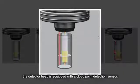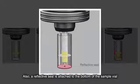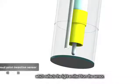Also, a reflective seal is attached to the bottom of the sample vial, which reflects the light emitted from the sensor.